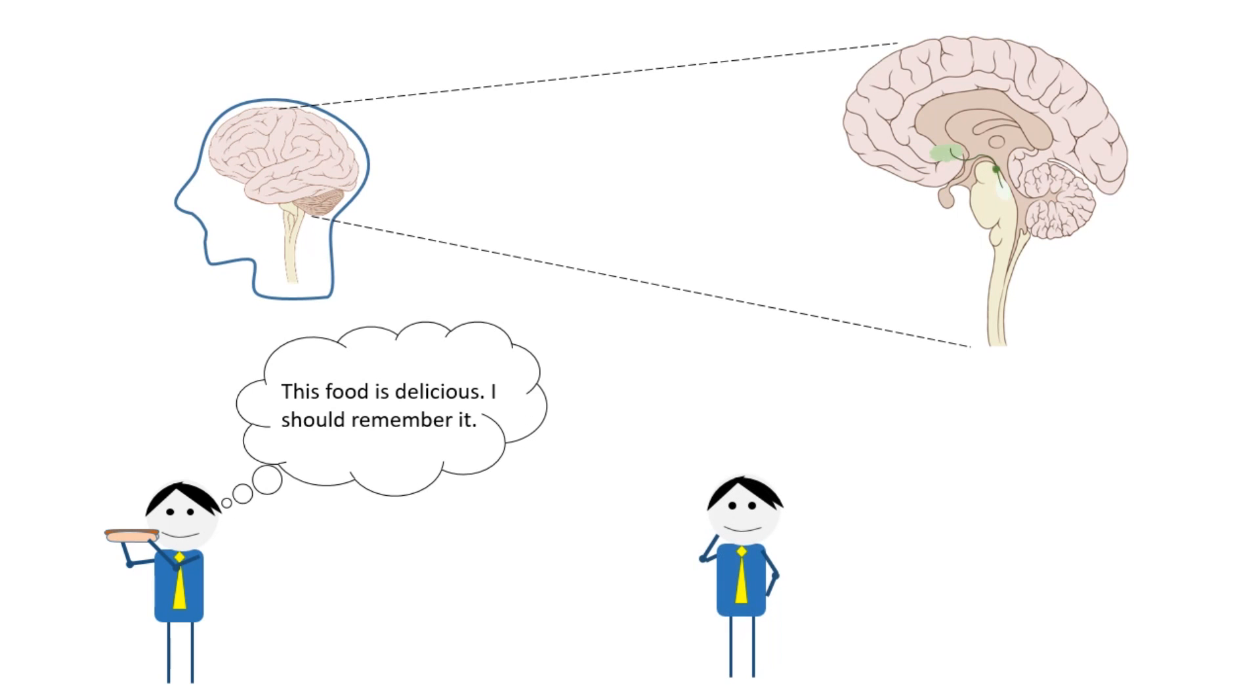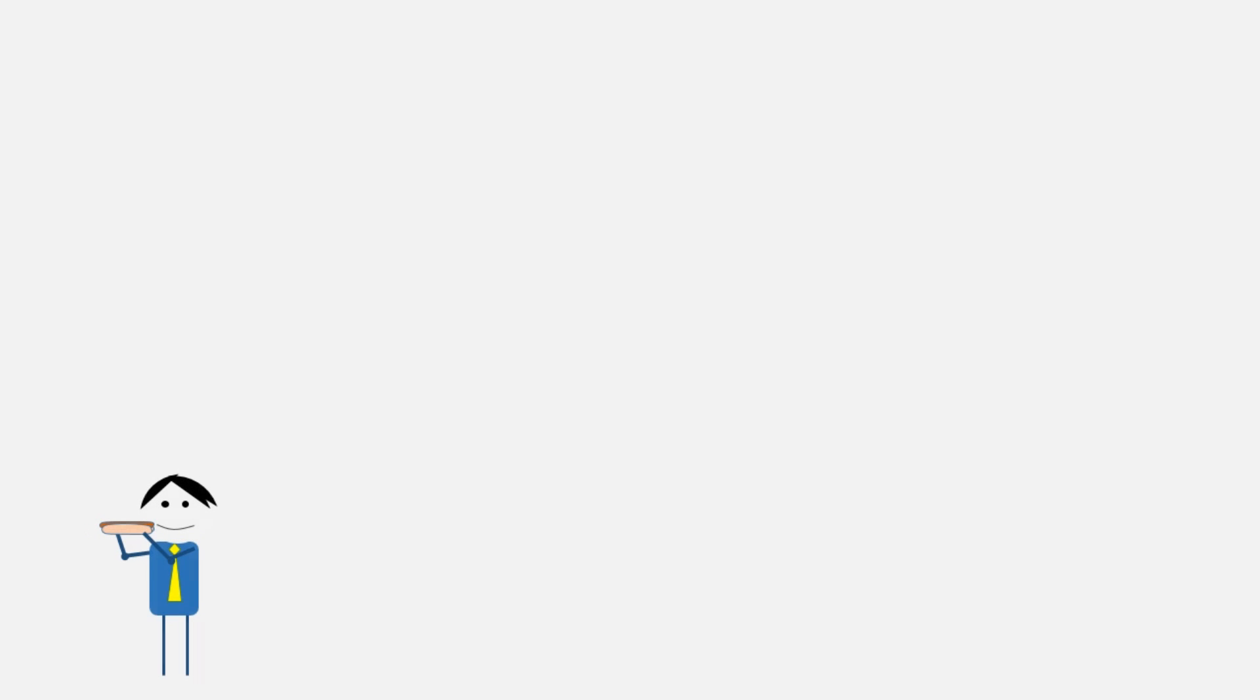This is normally desirable because the things that make us feel good are generally the things that are important for us to survive as a species. This process of making us feel good involves the increased release of a molecule called dopamine.